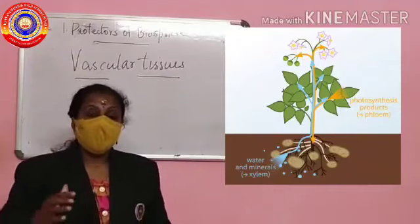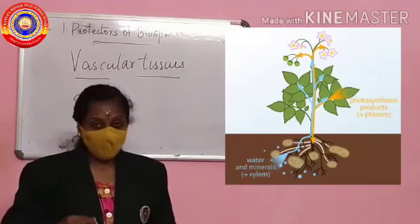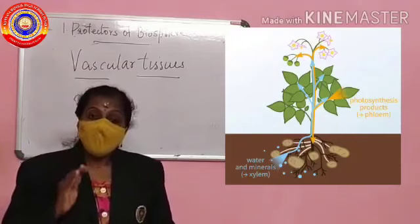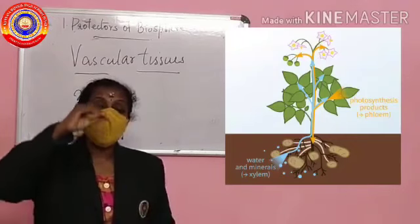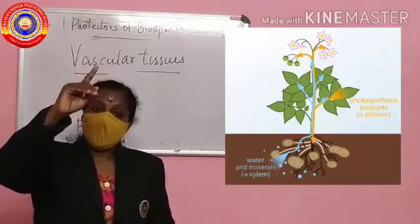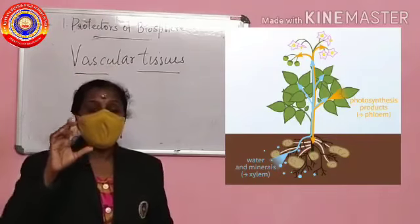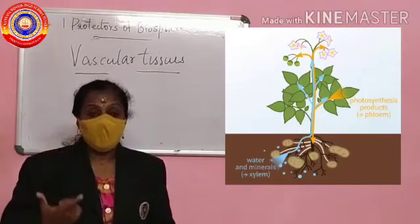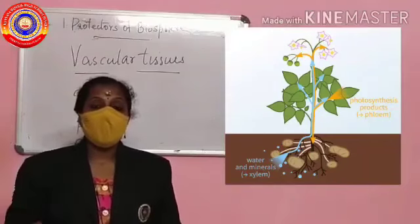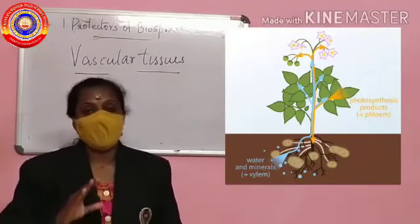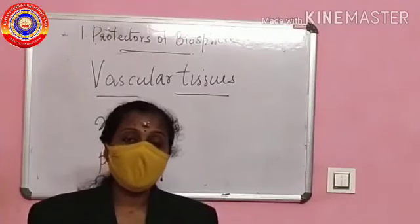Once again: the roots absorb water and minerals from the soil, and it is the xylem vessels which carry water and minerals to the leaves. The leaves, with the help of sunlight and carbon dioxide, prepare their food. And these prepared foods are sent to all parts of the plants by the phloem vessels. Read your textbooks and go through the videos whenever you get the time.